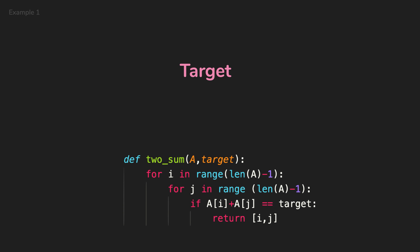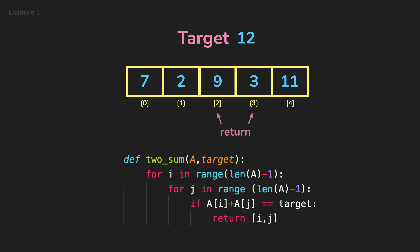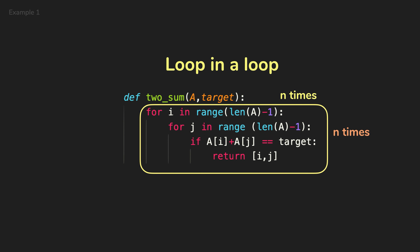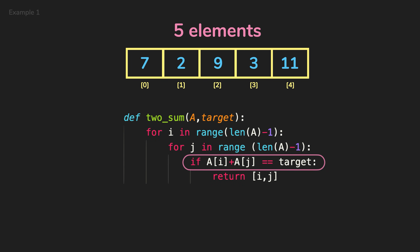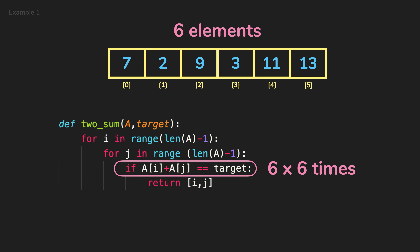Let's look at an example about finding two numbers in an array that sum up to a target, where you can use the same number twice. For example, if the target is 12 and the array is [7, 2, 9, 3, 11], it returns the indices of 9 and 3. The function loops each index of the array, and for each index loops again to check if they add up to the target — a loop in a loop, giving quadratic time complexity. If there are five elements, in the worst case this inner line executes 25 times; six elements — 36 times, and so on.